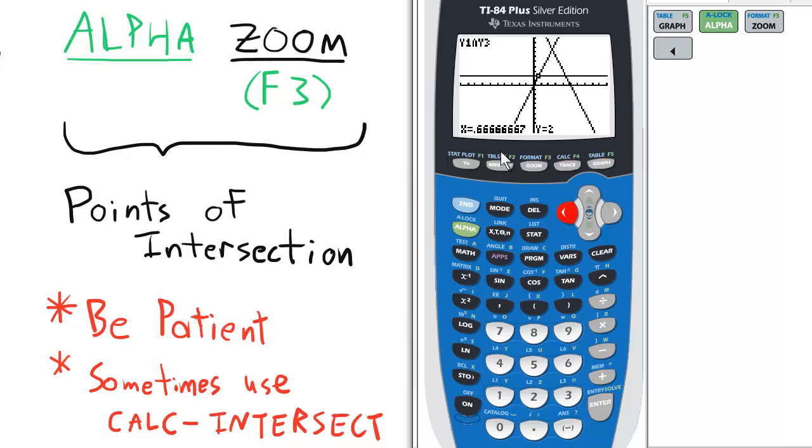So moving here, notice this other point of intersection of functions Y1 and Y3. This is the point 2 thirds comma 2, because 0.6 repeating is 2 thirds.